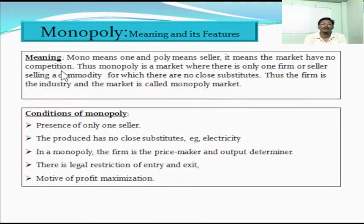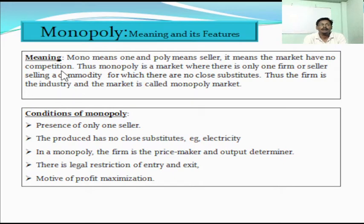What is monopoly? The term monopoly is derived from the combination of two words: mono means single, and poly means seller. It means the market does not have any competition. That is the reason the market is called monopoly and not monopoly competition. Thus, monopoly is a market where only one single seller sells a commodity which must not have any close substitutes.